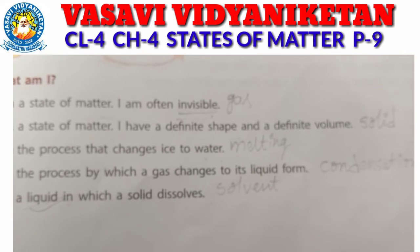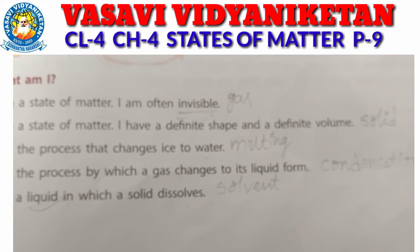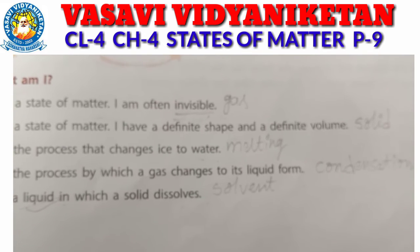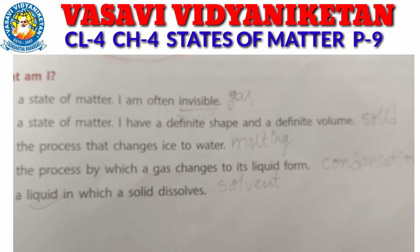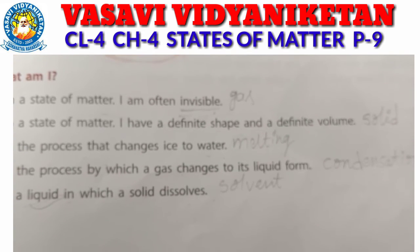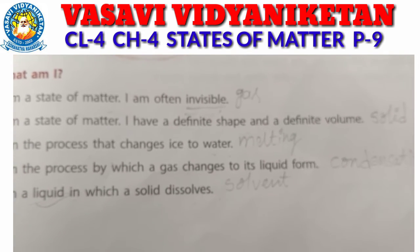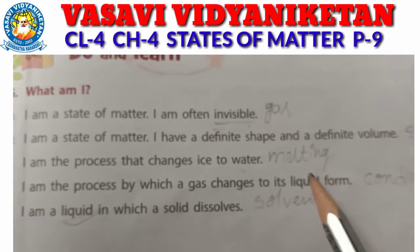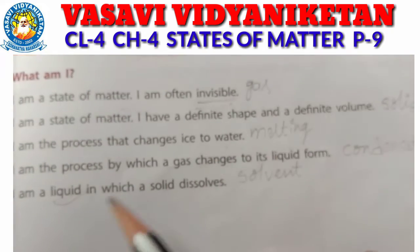After heat is applied and then cooled, this is called the oil layer — water is now in the water. It is used to melt, like cocoa. So this process is known as melting.